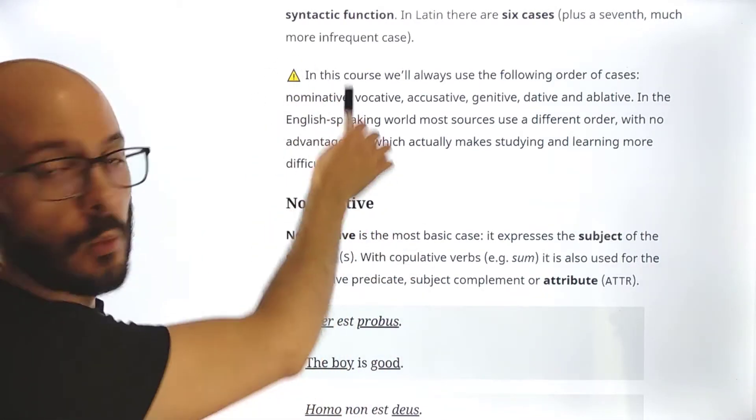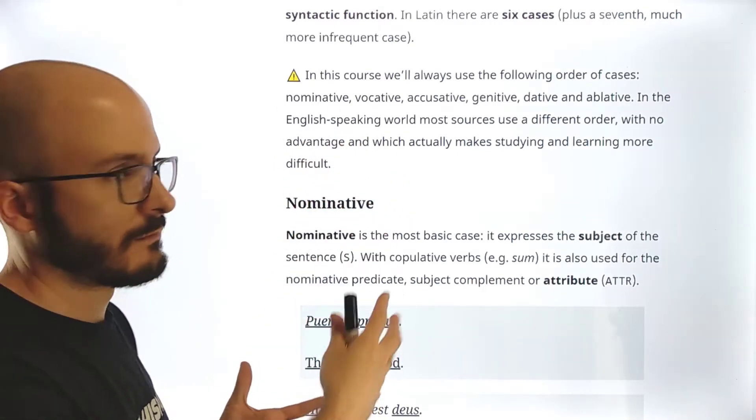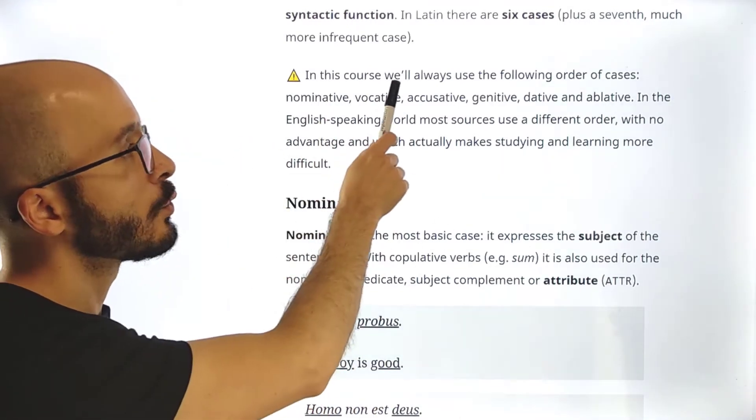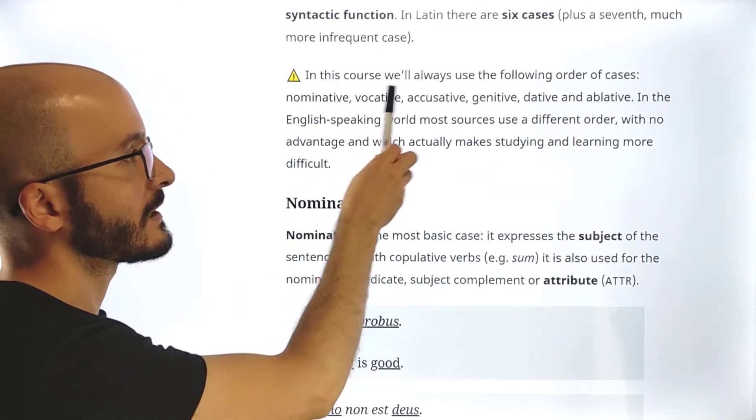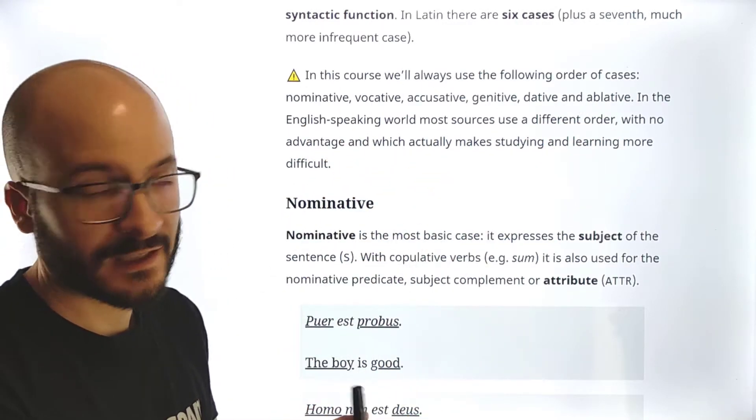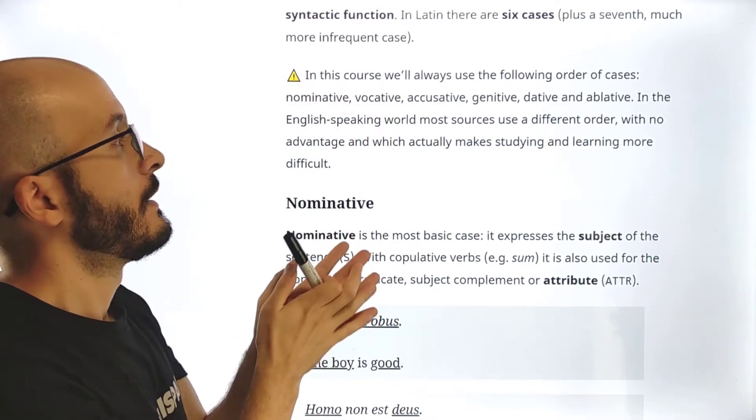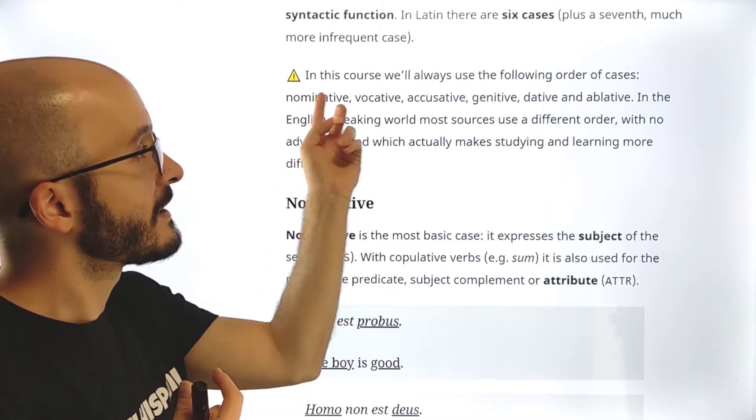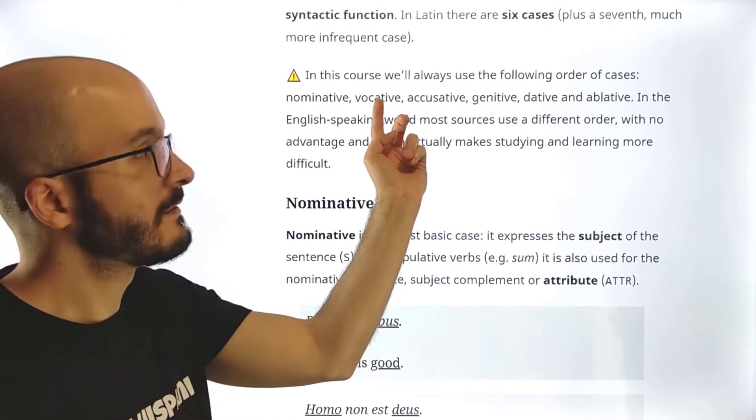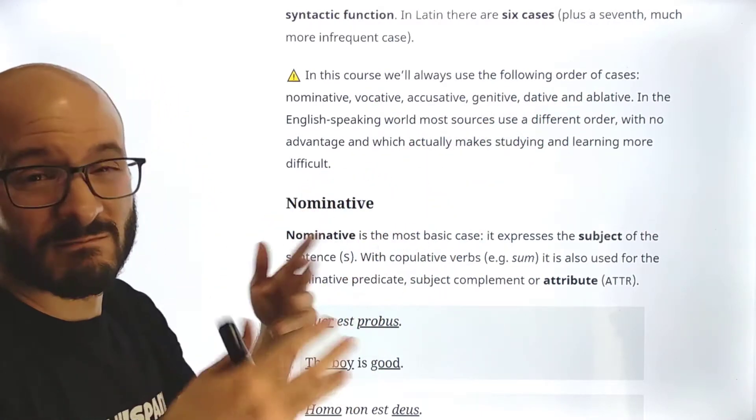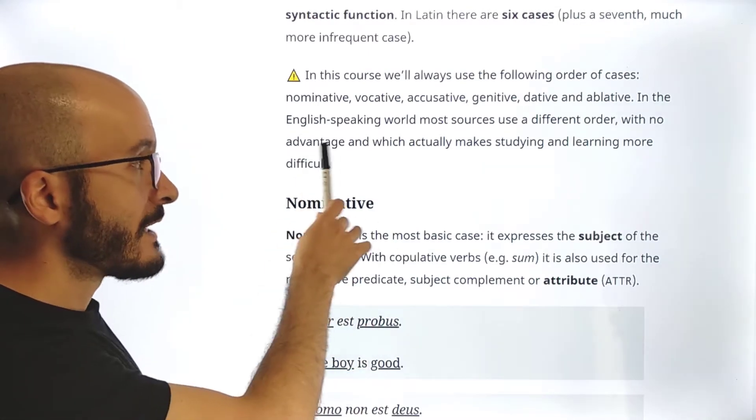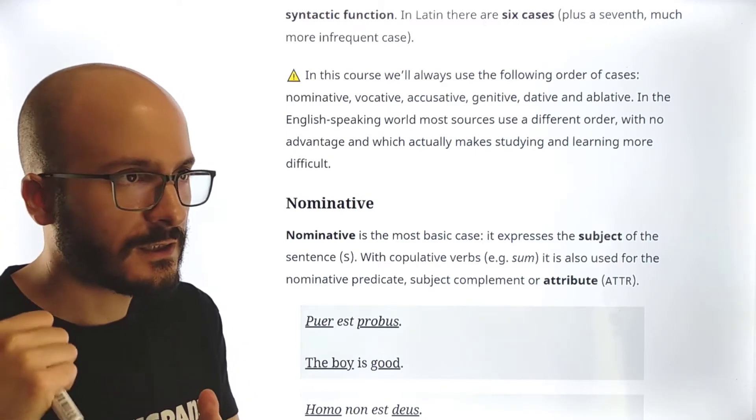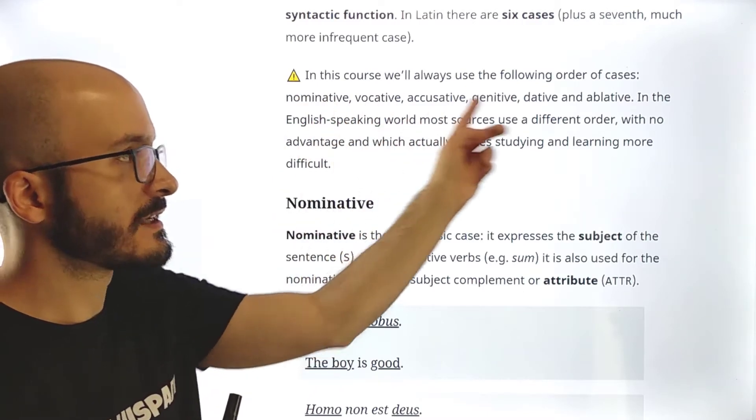And also a warning. I already said this in the zero class, but I repeat this because I think it's kind of important. In this course, we'll always use the following order of cases: nominative, vocative, accusative, genitive, dative, and ablative in this very order. In the English speaking world, most sources use a different order. So usually something like nominative, genitive, accusative, they skip vocative, then dative, ablative, whatever. Other order with no advantage and which actually makes studying and learning more difficult.